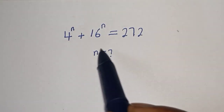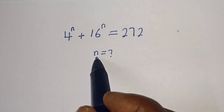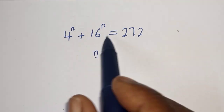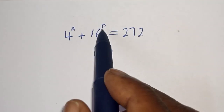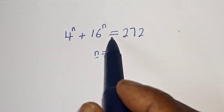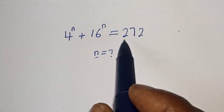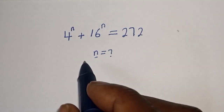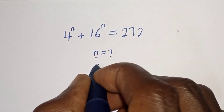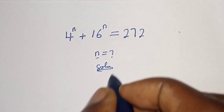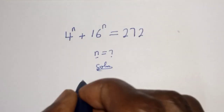Hello, welcome to Magis. In this class we want to find the value of n from this equation: 4 raised to power n plus 16 raised to power n is equal to 272. Like, share, comment and subscribe.